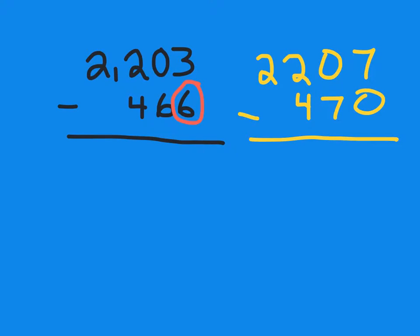Now what I want to do is work with this 7. I'm going to add 3 to the 7, so that means I need to add 3, or 30, to my top number as well. So my top number now becomes 2,237. The 3 comes from 3 plus 0, and my bottom number when I add 30 to that bottom number now becomes 500.